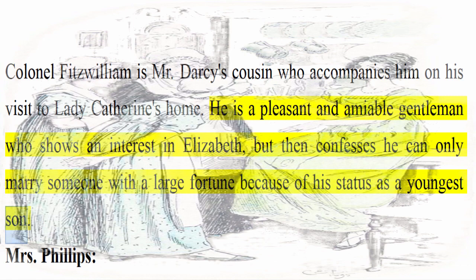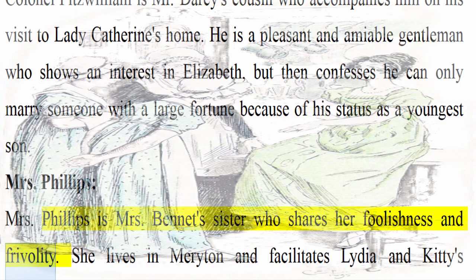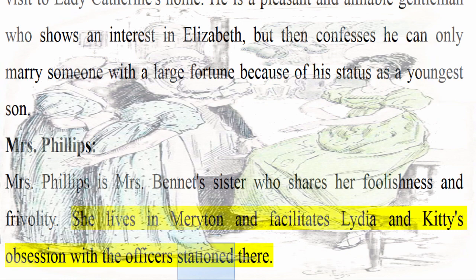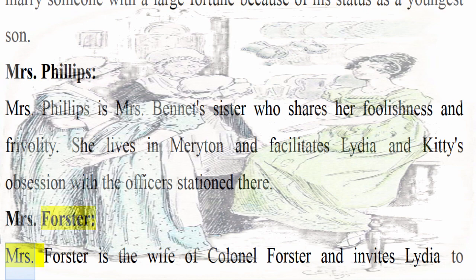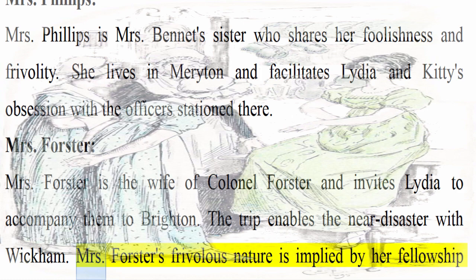Mrs. Phillips: Mrs. Phillips is Mrs. Bennet's sister who shares her foolishness and frivolity. She lives in Merriton and facilitates Lydia and Kitty's obsession with the officers stationed there. Mrs. Forster: Mrs. Forster is the wife of Colonel Forster and invites Lydia to accompany them to Brighton. The trip enables the near disaster with Wickham. Mrs. Forster's frivolous nature is implied by her fellowship with Lydia.